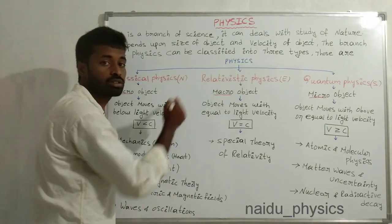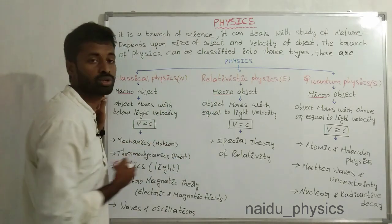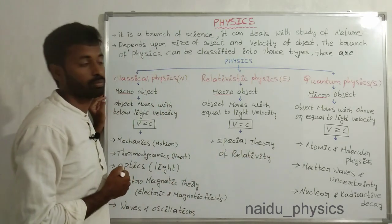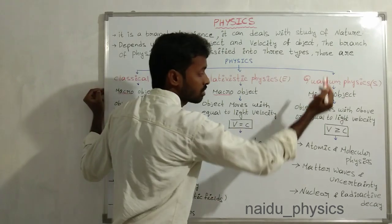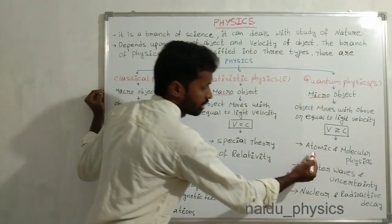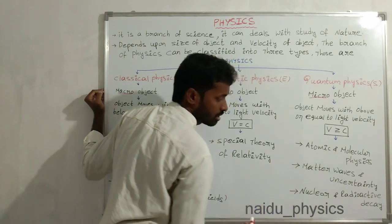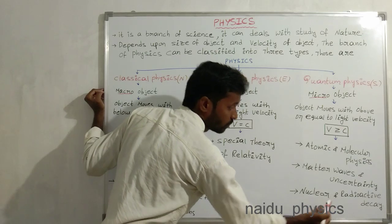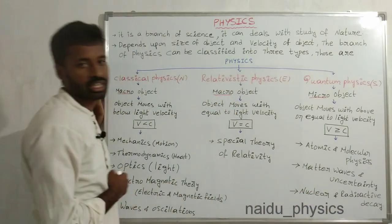In relativistic physics also, we have to study some more topics - that is special theory of relativity. In quantum physics also, we have to study some more different topics: one is atomic and molecular physics, matter waves and uncertainty, and finally nuclear and radioactive decay.